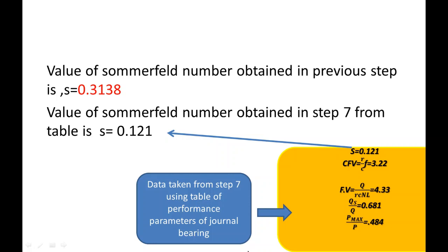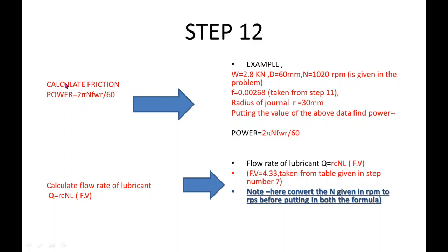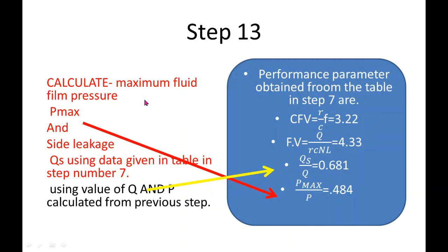In step 11, we find the coefficient of friction using the CFV value from the table in step 7. In step 12, we calculate friction power loss P and lubricant flow rate Q using the respective formulas and data shown. We also calculate maximum fluid film pressure and side leakage of the lubricant using the p_max by p ratio and q_s by q ratio obtained from step 7.